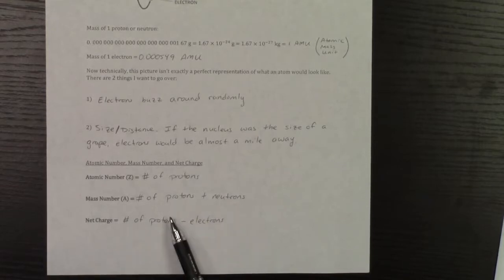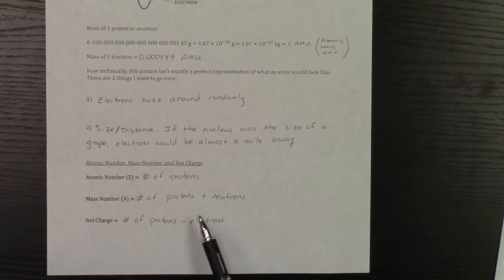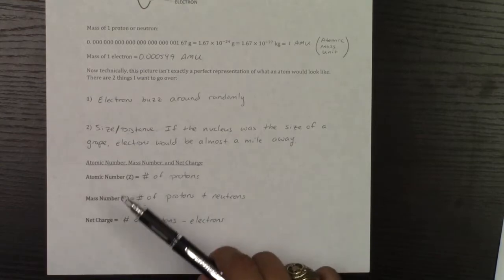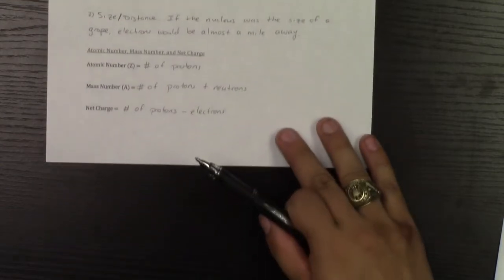And then your net charge is going to be the difference between protons and electrons. So let's run through a couple of examples finding atomic number, mass number, and net charge.